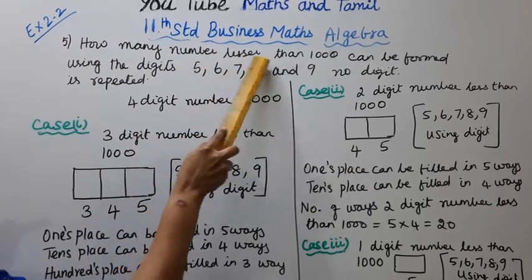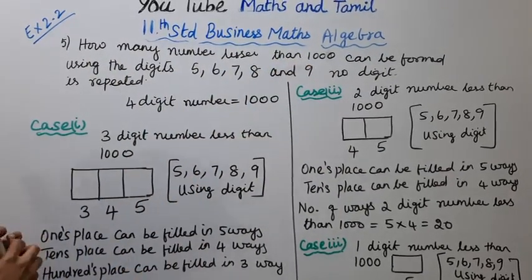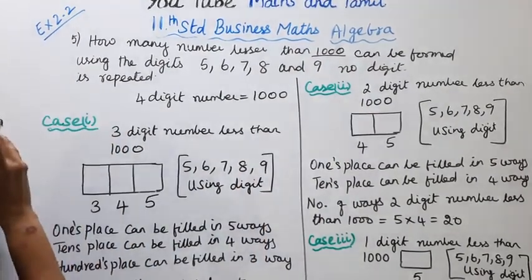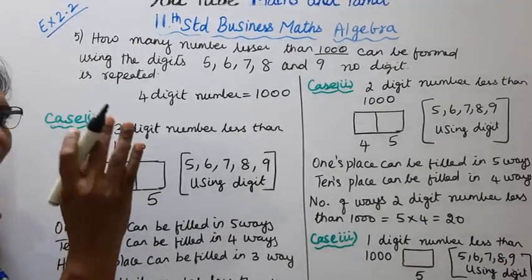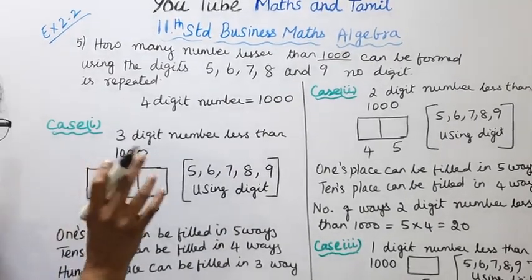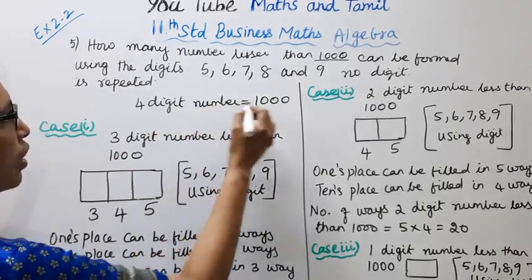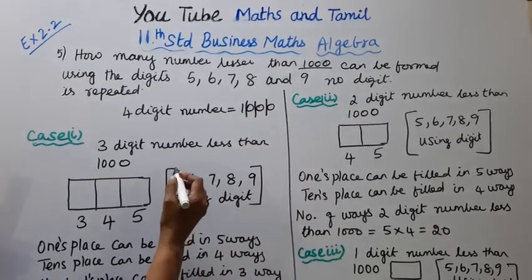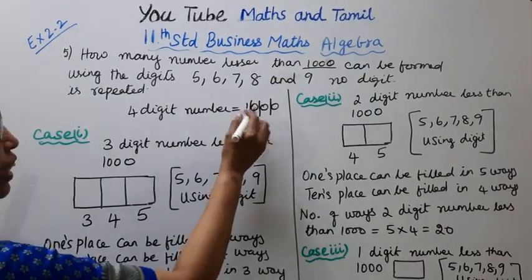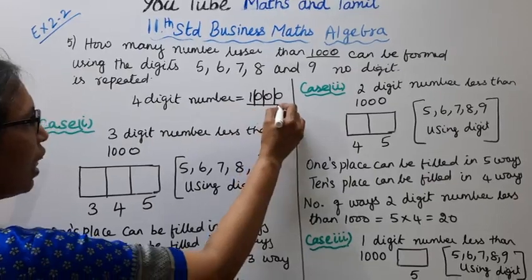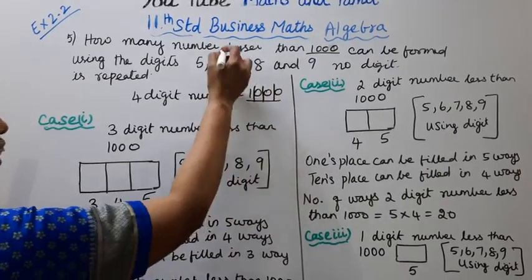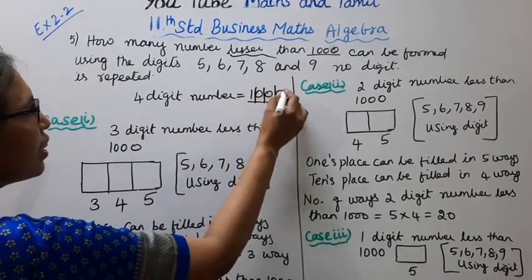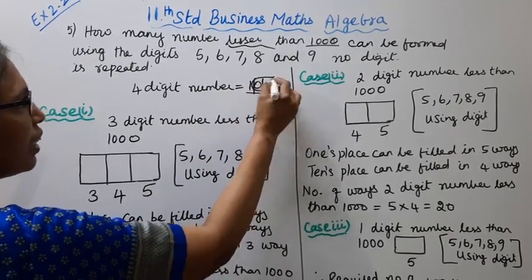How many numbers lesser than 1000? That means 1 to 999. The 4-digit number starts at 1000, so numbers less than 1000 are 1-digit, 2-digit, and 3-digit numbers — covering 1, 10, and 100.